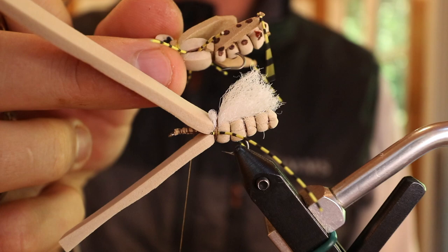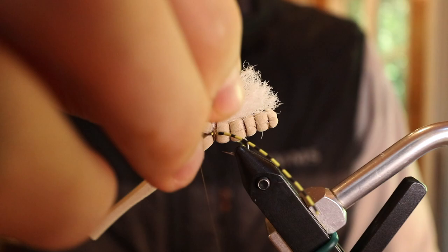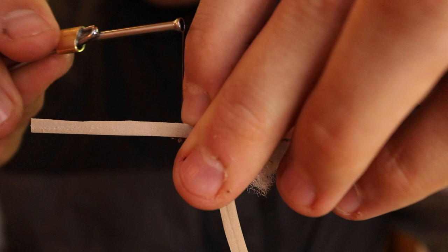From there I can add my other legs in front of this, I'm going to add them onto the hook shank itself in between that foam and then I can move my thread all the way up to the front right behind that eyelet, secure down the bottom of the foam, finish that off.